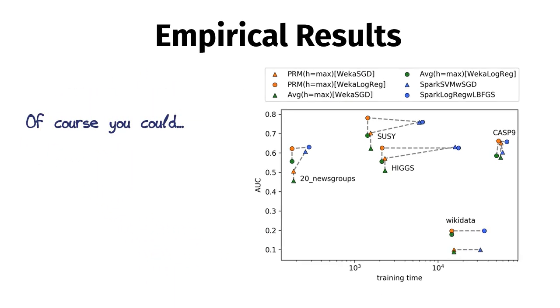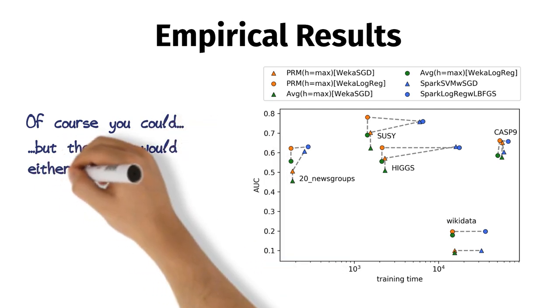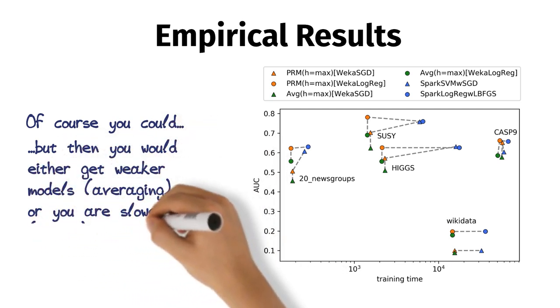Of course you could, but then you would either get weaker models for averaging, or you are slower for Spark.